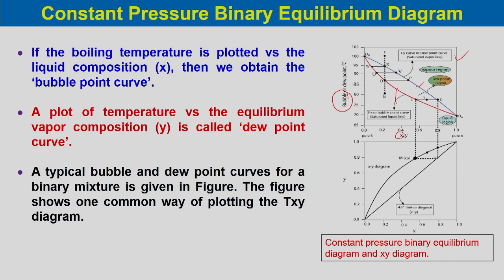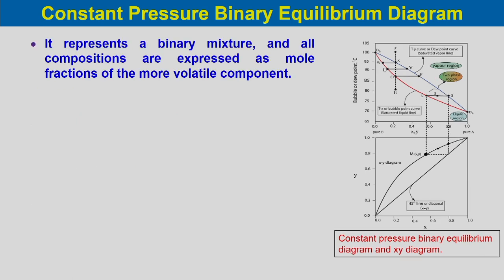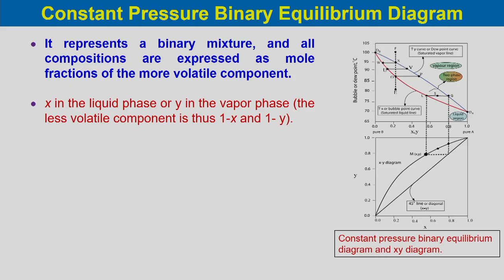A typical bubble and dew point curve for a binary mixture is the T-x-y diagram. All compositions are expressed as mole fractions of the more volatile component: x for liquid phase and y for vapor phase. The composition of the less volatile component is obtained by subtracting from 1: (1−x) for liquid phase and (1−y) for vapor phase.